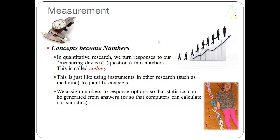The General Social Survey goes out and collects information from thousands of people every two years. It's done so since 1972 and asks people some behavioral questions about things that they do, but mostly asks them attitudinal questions. Those questions are then coded, or given numbers, so that they can be used by a computer for statistical analysis.